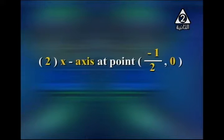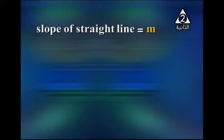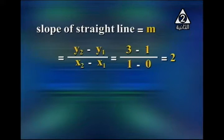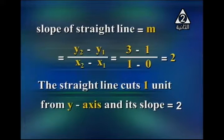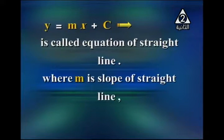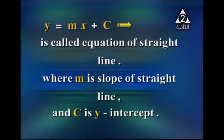To find the slope of the straight line, take two points and substitute into the formula: slope m = (y₂ − y₁) / (x₂ − x₁). That is (3 − 1) / (1 − 0) = 2. So the straight line cuts one unit from the y-axis and its slope is 2. Therefore y = mx + c is called the equation of the straight line, where m is the slope and c is the y-intercept.